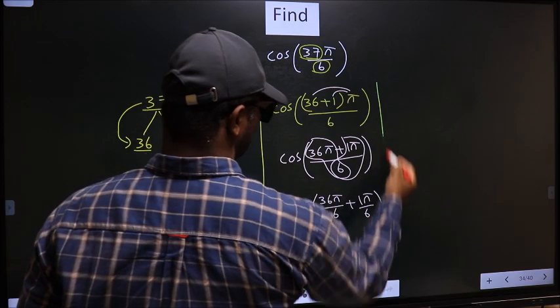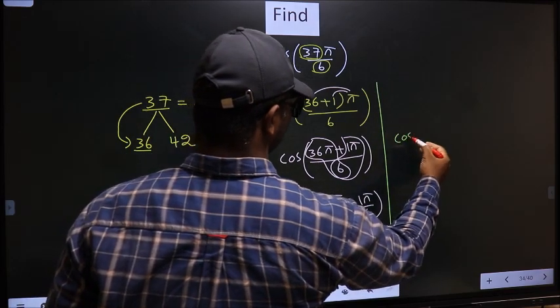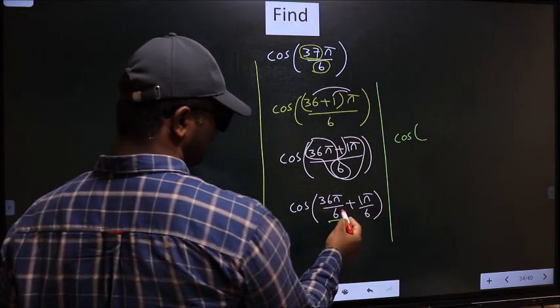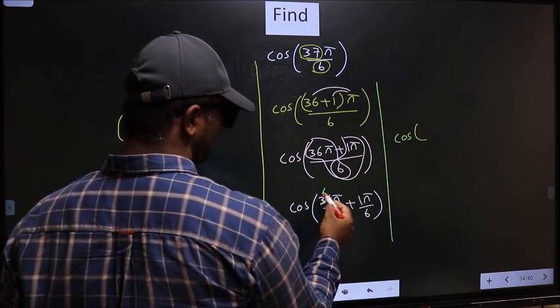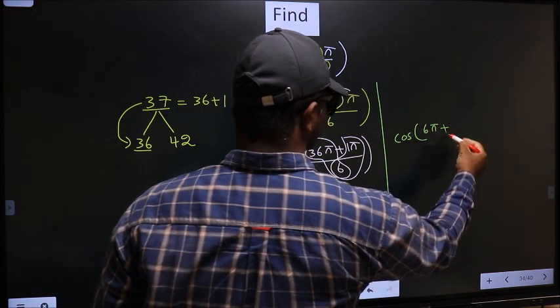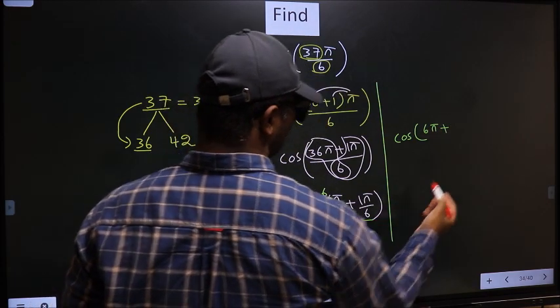Next, cos - now here you should cancel 6. So we get 6π plus this, no change.